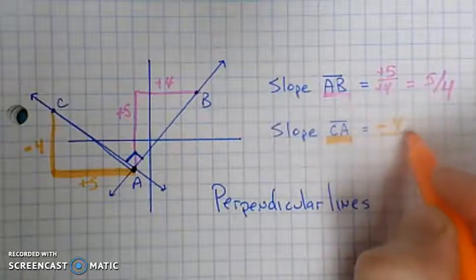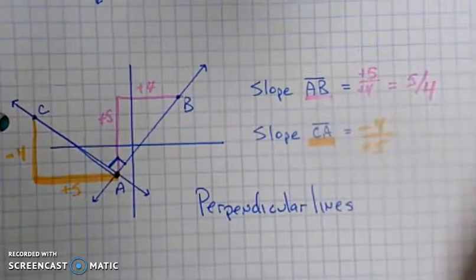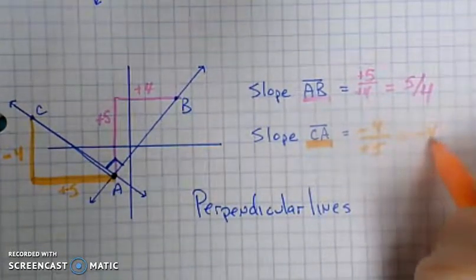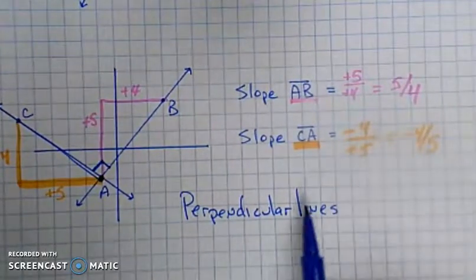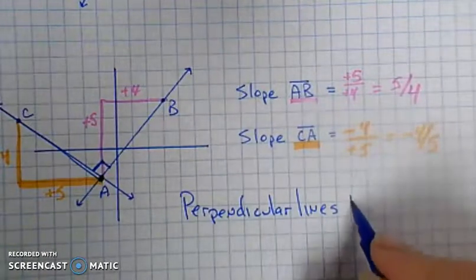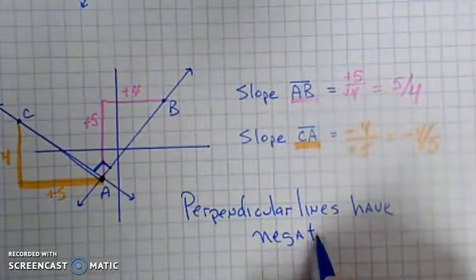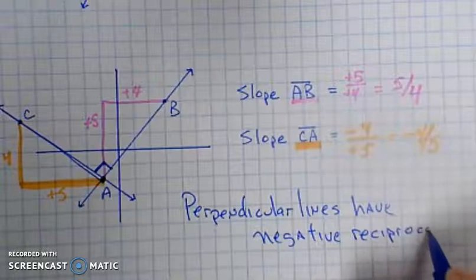This one is a minus 4 and a positive 5. A lot of the same numbers here, but you definitely get a different answer. So again, this one doesn't simplify, but I've got negative 4 fifths. And that's where we find our relationship. Perpendicular lines have negative reciprocal slopes.